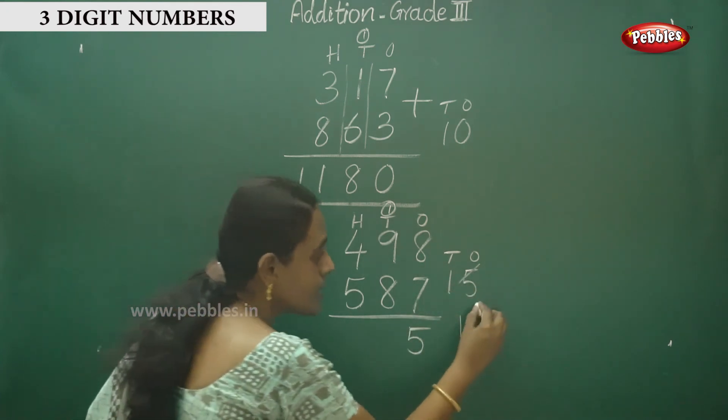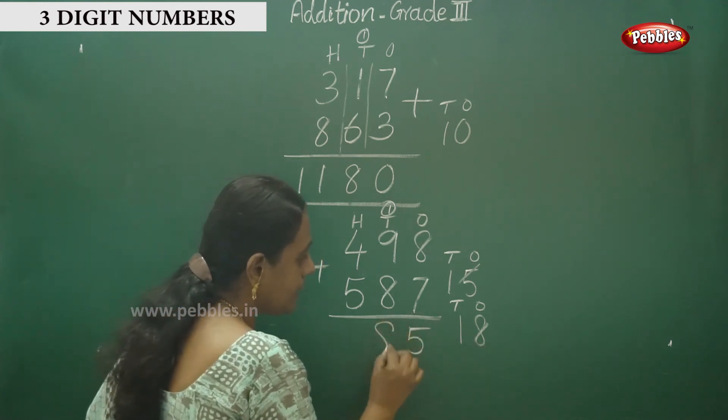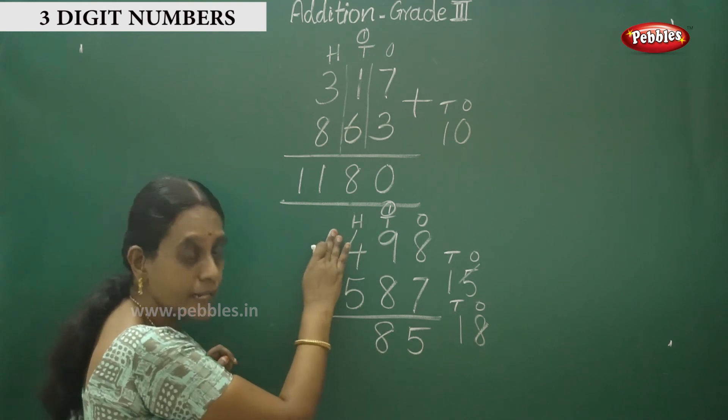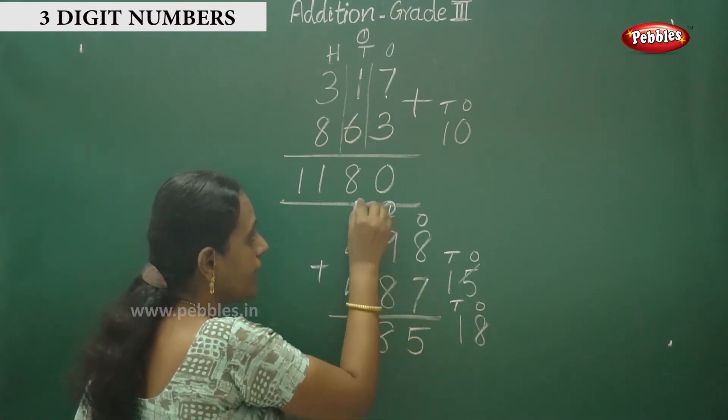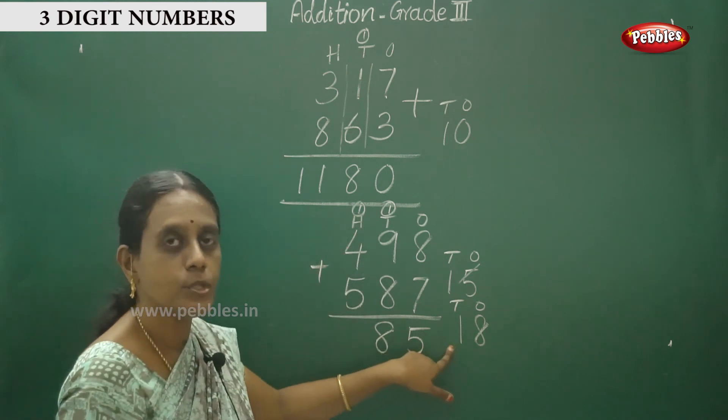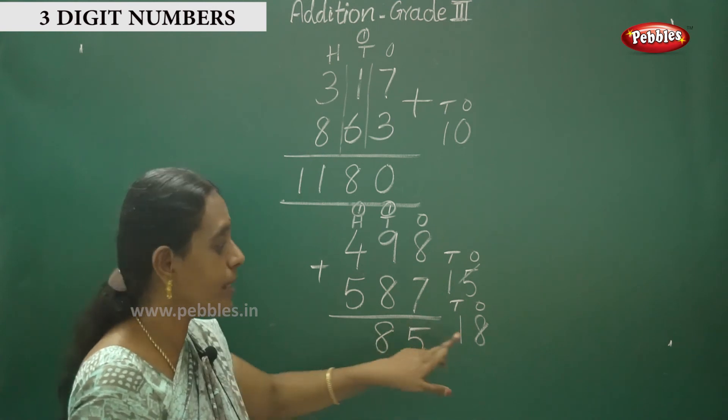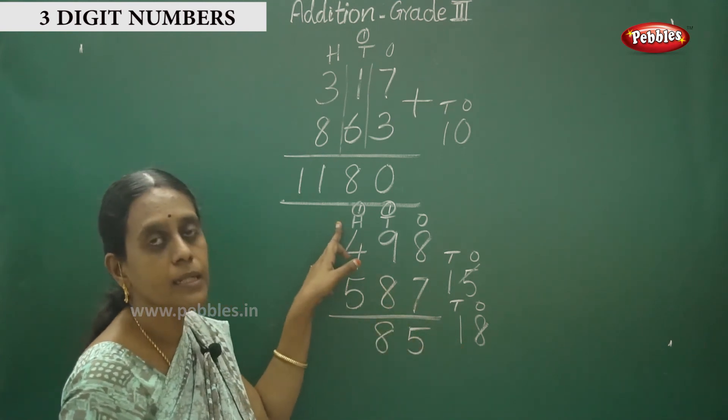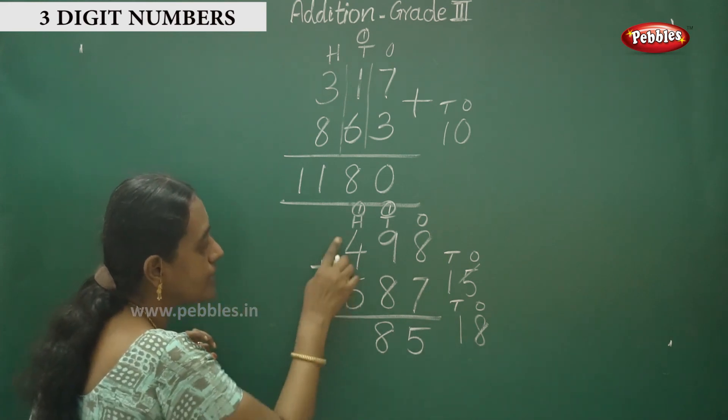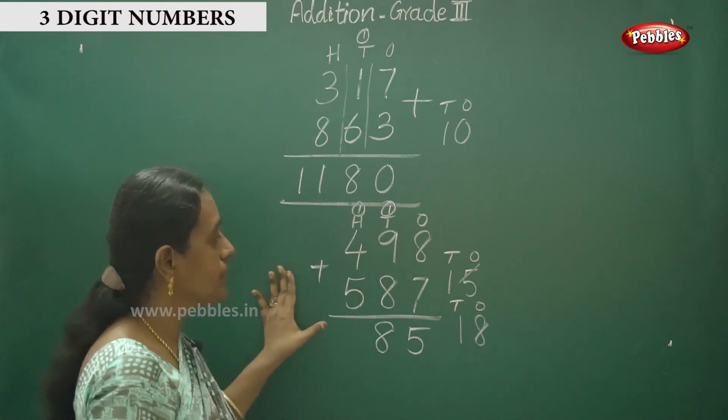Eighteen, where does the eight go? What is the next digit? Hundreds place. Write over the hundreds place, this one. This is the method. Eighteen: the eight stays here, carry over this one over the hundreds place.